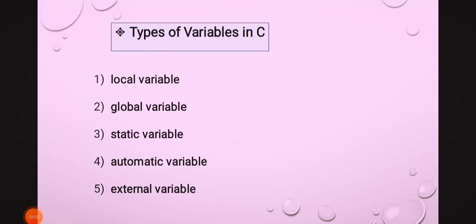Types of variables in C — there are five types: local variable, global variable, static variable, automatic variable, and external variable. We will learn them one by one.